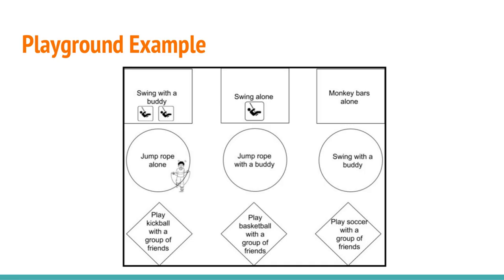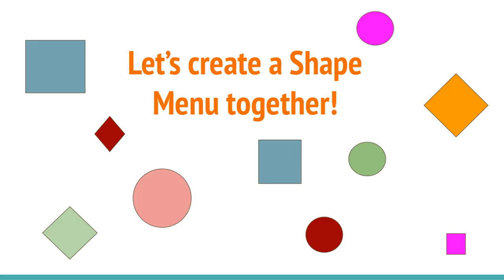If you have questions, throw them in the chat. The URL for free images on Pixabay is also in your resources. We're going to go ahead and create another shape menu — this time a literary example — so you can see how the objectives change and how this would be used in the classroom for an academic activity.